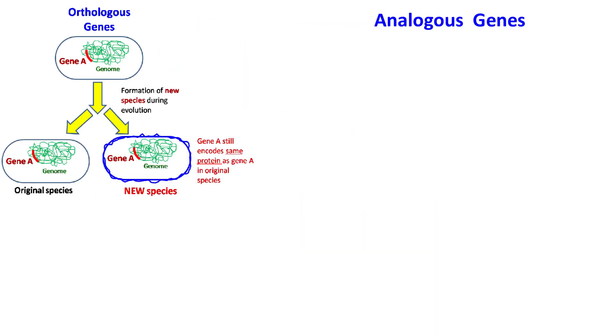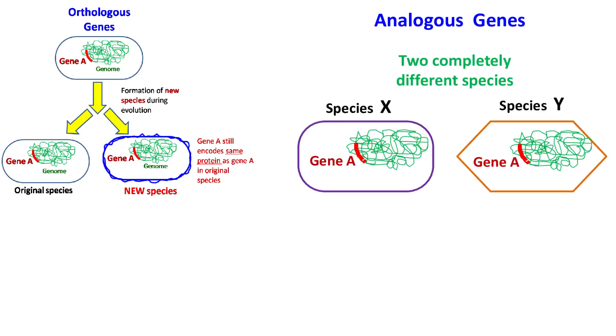Analogous genes. When two completely different species have genes that encode the same protein, then such genes are called analogous genes.